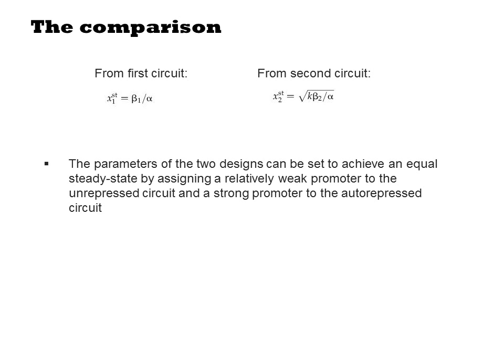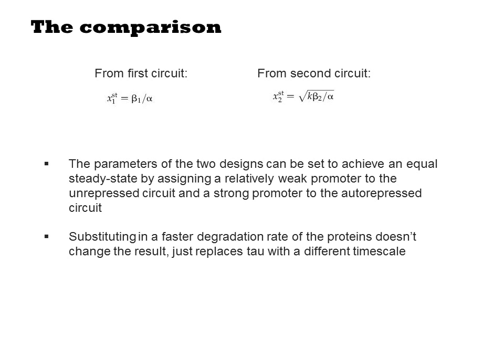Doing so would not change the relative response time as that only depends on alpha in both cases. If, for example, you added a degradation tag to the protein, you could achieve faster degradation than dilution, but this would not change the result. The value of tau just gets replaced with a faster value.